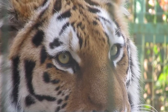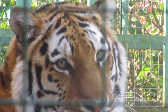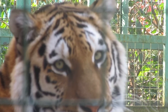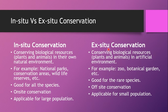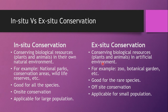In situ conservation is also called on-site conservation, and ex situ conservation is called off-site conservation. On-site conservation is related to the natural habitat, while off-site conservation is related to artificial habitat or out of the natural habitat. In situ conservation is applicable for large populations, whereas ex situ conservation is applicable for small populations. In this way we can differentiate between in situ and ex situ conservation. Thank you.